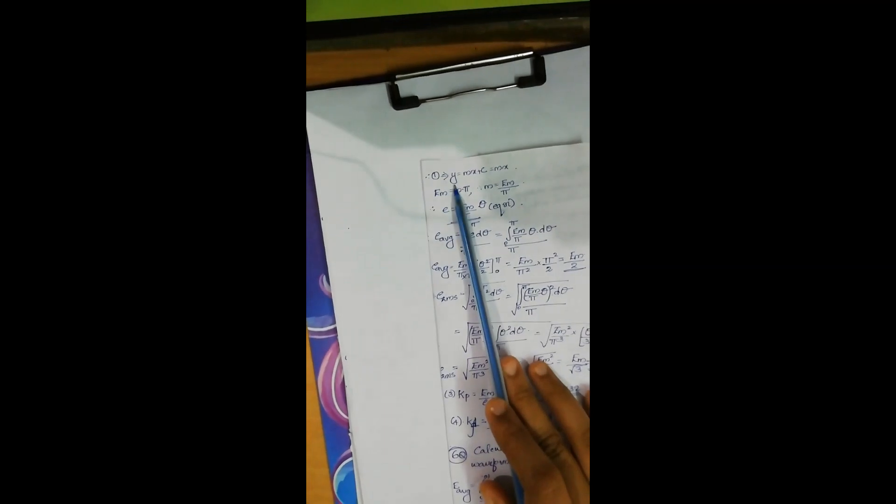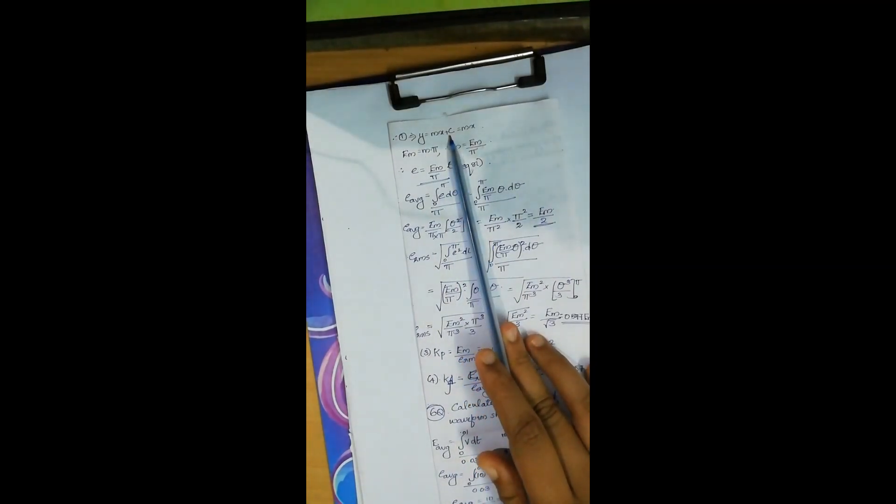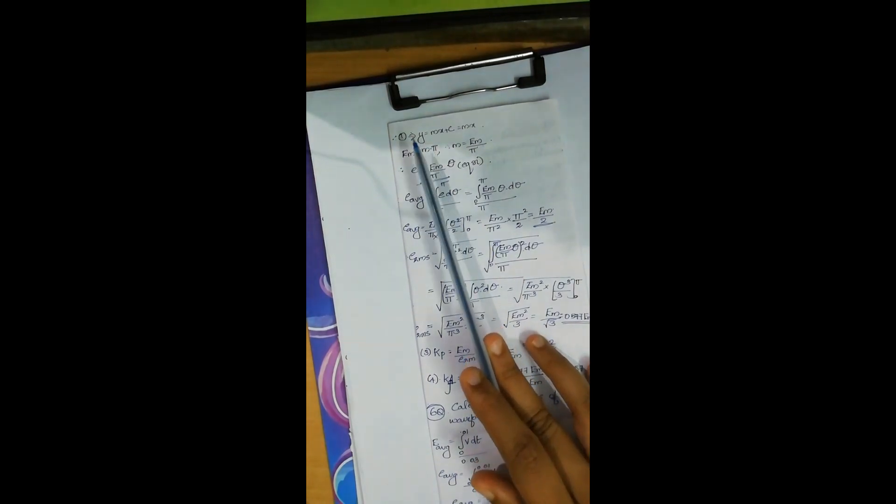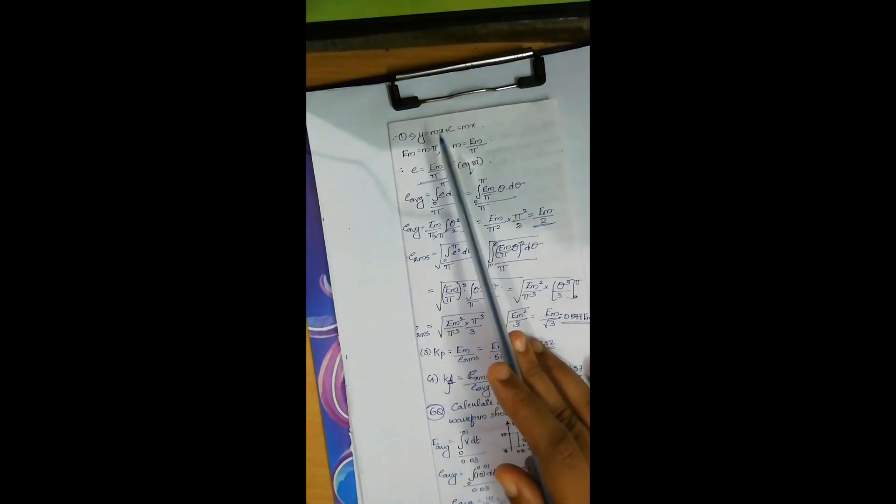So now the equation becomes when y is equal to Em, x is equal to pi. That is when y is equal to mx plus c, y is getting considered as Em and x is getting considered as pi.